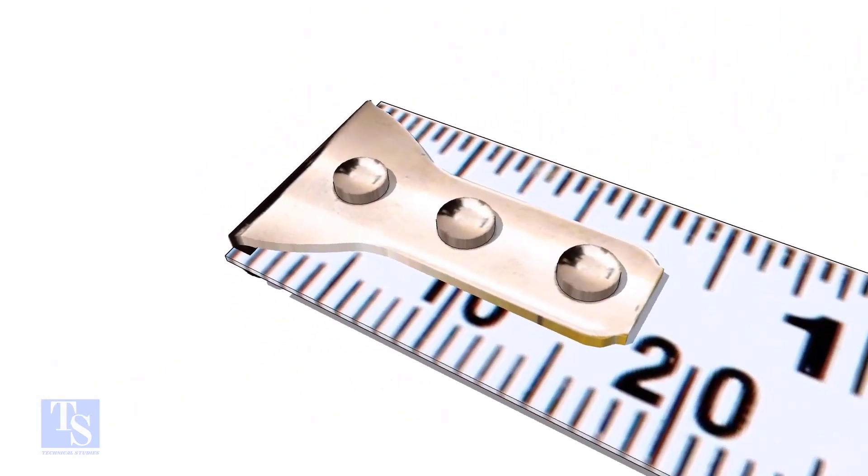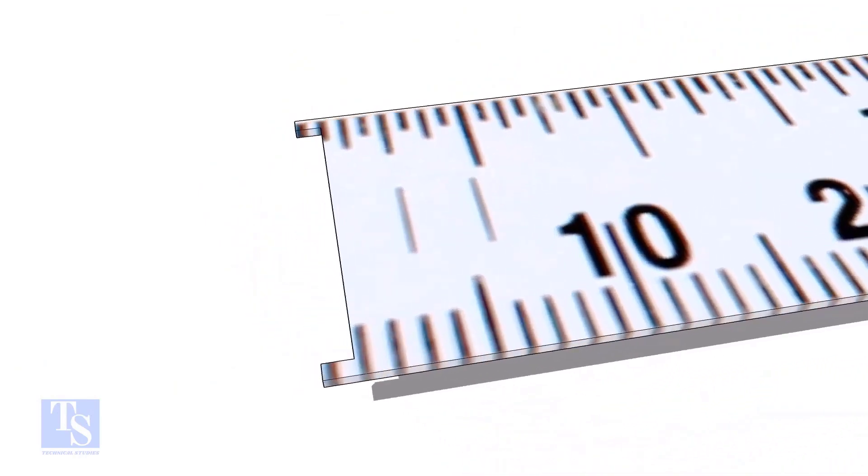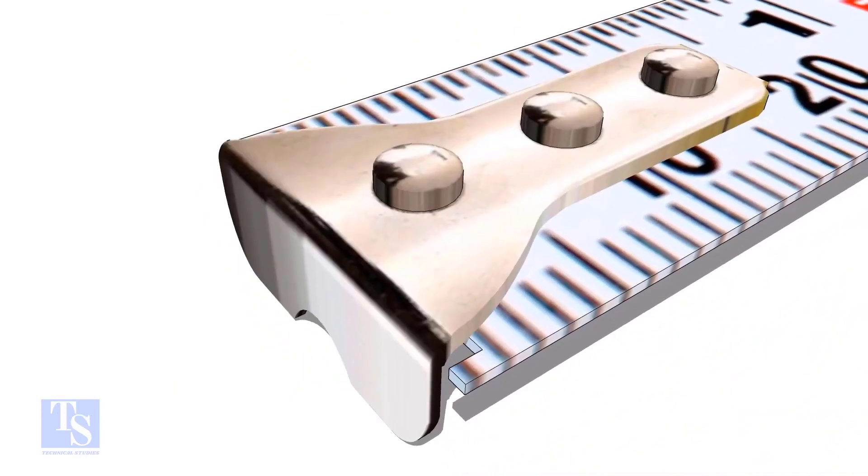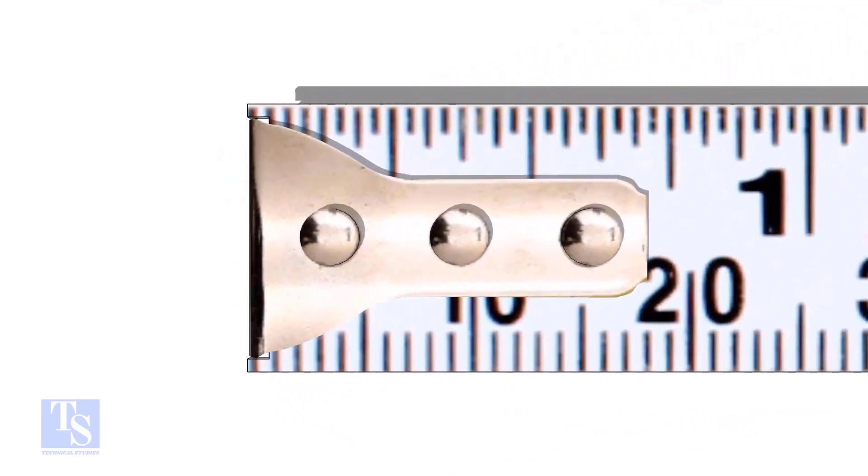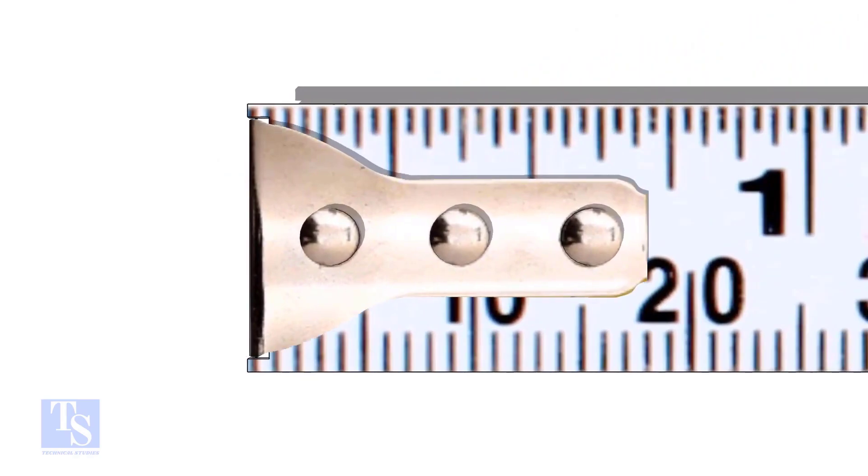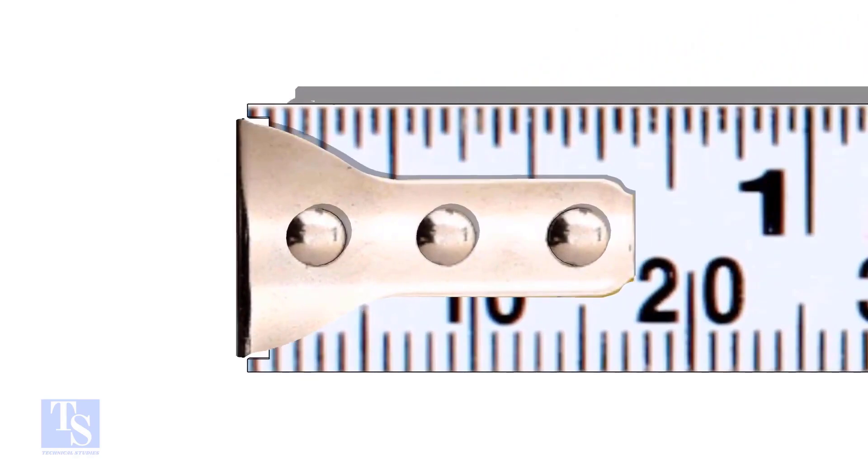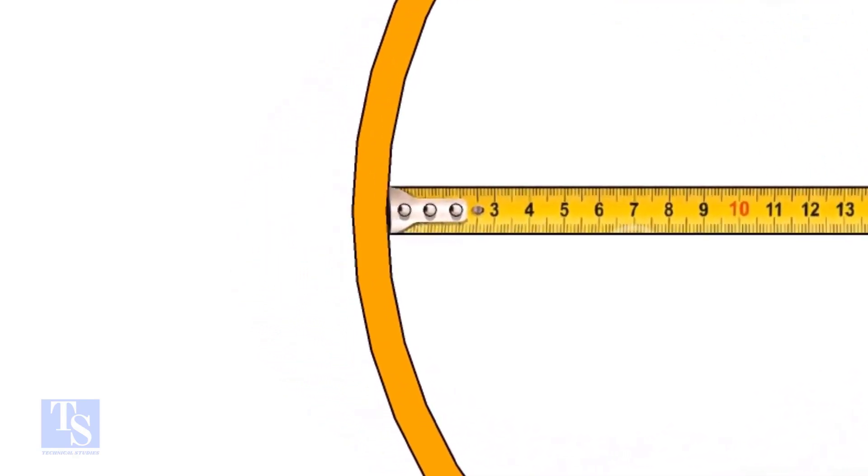I am sure all of you have noticed there is a small play between a measurement tape and its hook. Do you know why this play is given? When you measure an outer dimension, the hook will move outwards, and in case of an internal dimension checking, the hook will move inwards, and the accuracy of the tape will be maintained.